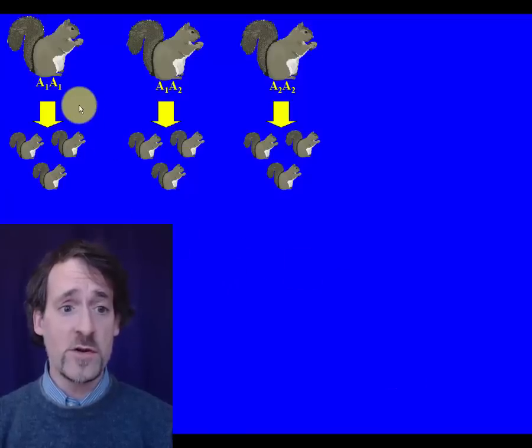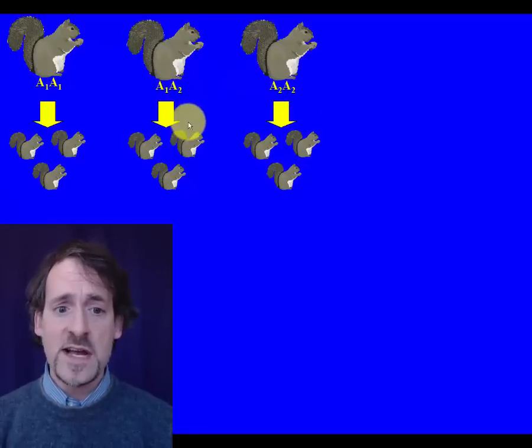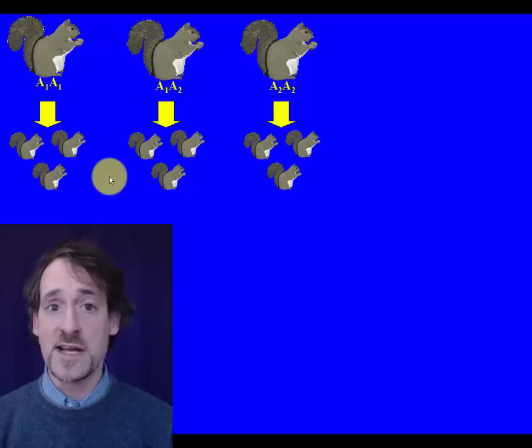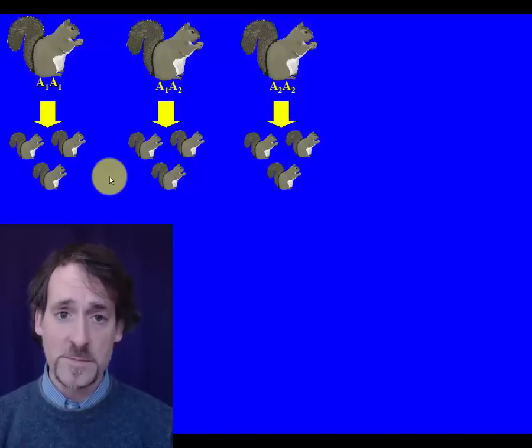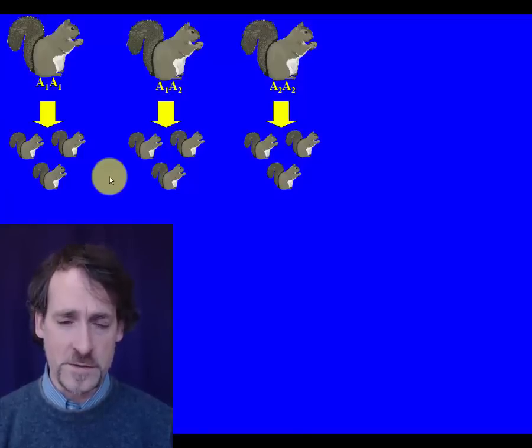So here's the scenario we're imagining. You've got A1A1 homozygotes, A2A2 homozygotes, and the heterozygotes, and they all on average have the exact same number of offspring. These are what are called neutral alleles. None of them has any fitness advantage over the other.